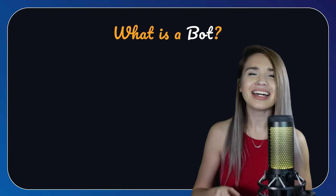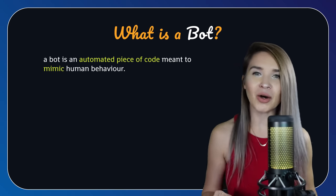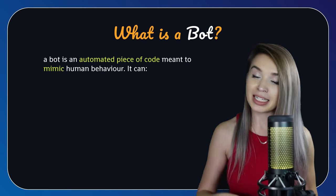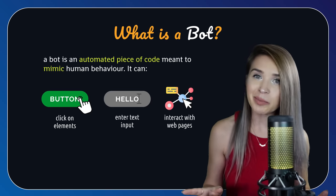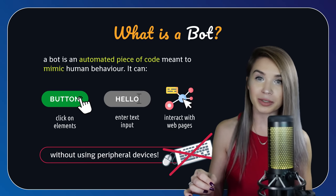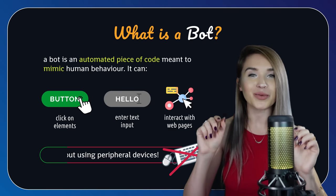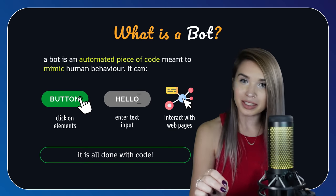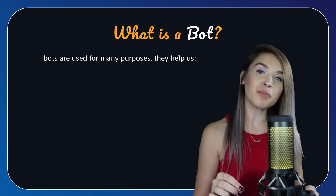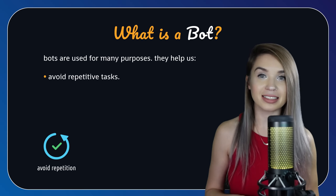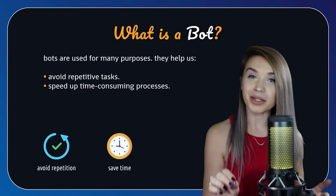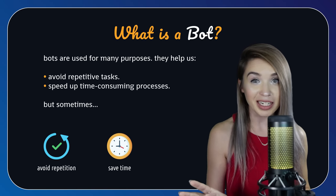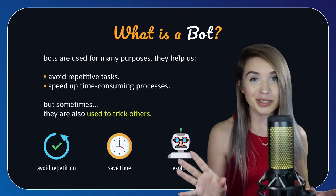So first of all, what exactly is a bot? A bot is a piece of code that mimics human behavior. It clicks on buttons, it enters text, and it interacts with websites without using a mouse or keyboard — it is all being done with code. We use them for many purposes. Bots help us avoid repetitive tasks and also speed up time-consuming processes. But the problem with bots is that sometimes they are also being used to trick others.